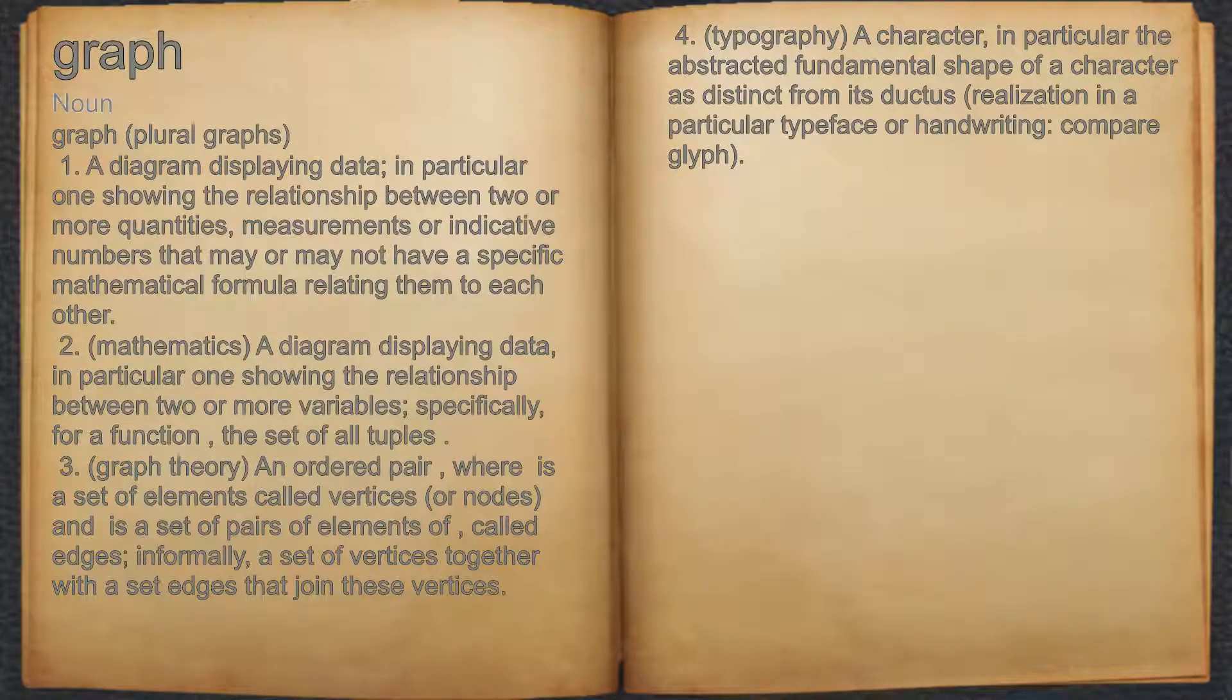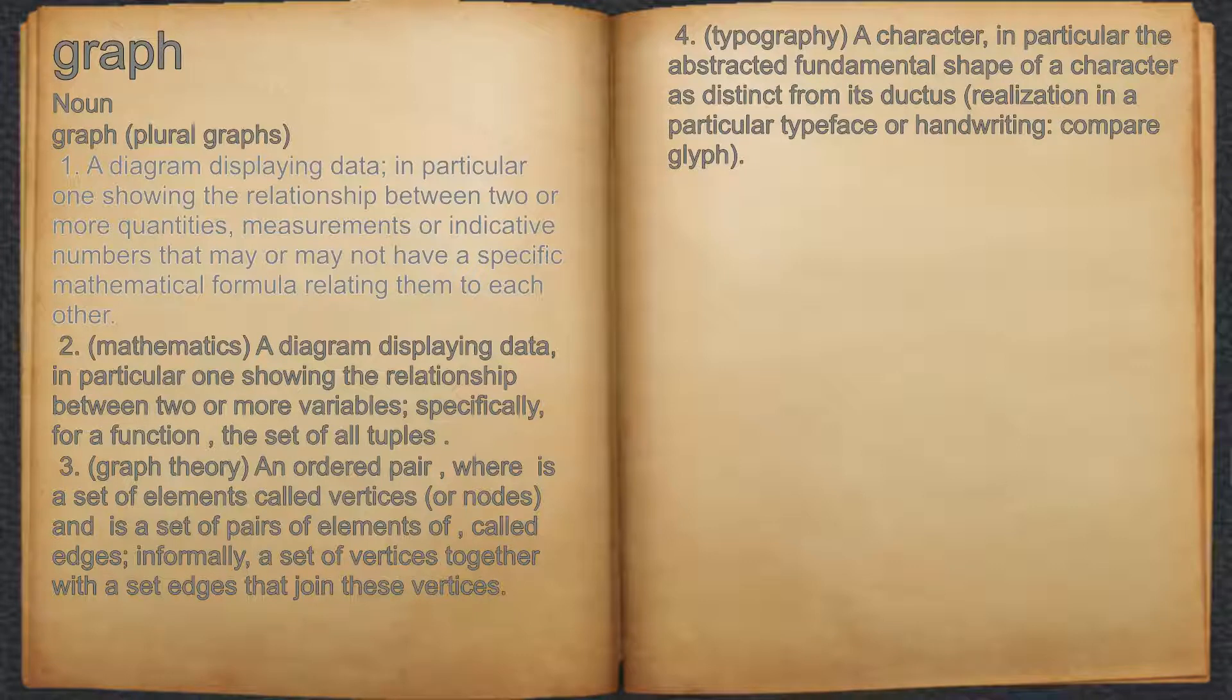Graph. Noun 1. A diagram displaying data, in particular one showing the relationship between two or more quantities, measurements or indicative numbers that may or may not have a specific mathematical formula relating them to each other.